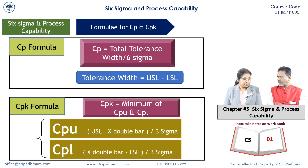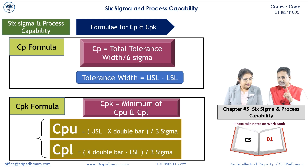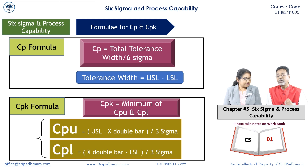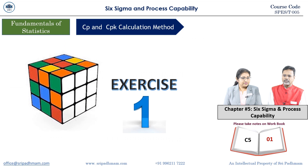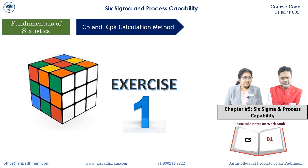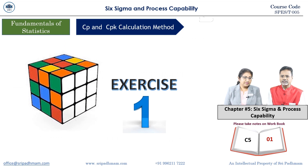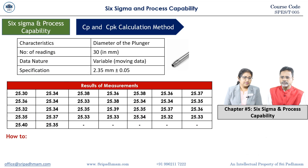CPK is the minimum value of CPU and CPL. The general target for CPK is a minimum of 1.33. Minimum 1.33 is the practical minimum acceptable value.